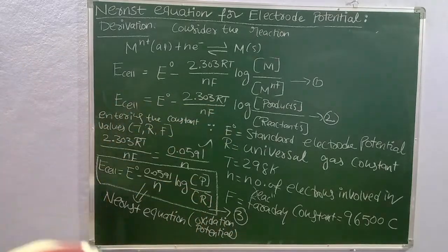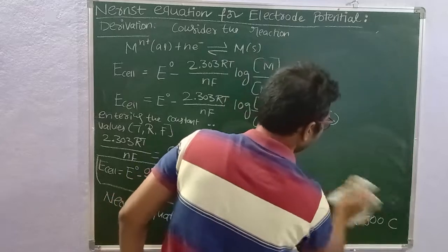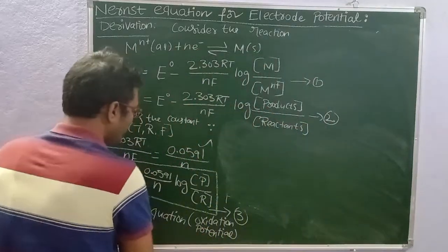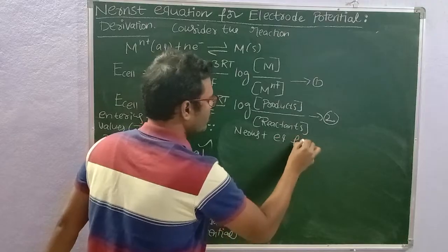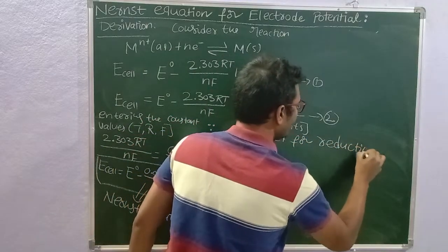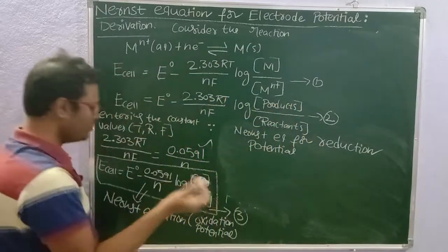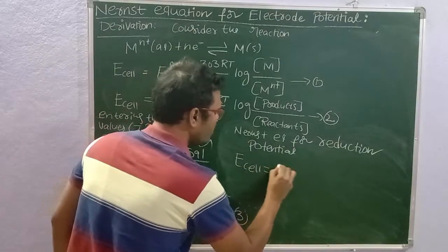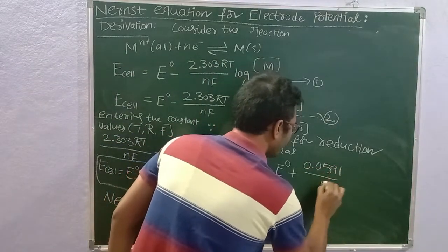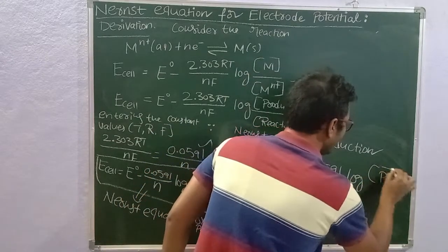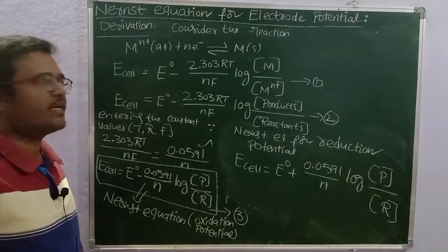Now let us write the Nernst equation for reduction potential. The equation is very simple — just change the sign. E cell = E naught plus 0.0591 divided by n, times log of concentration of products divided by concentration of reactants. That is the expression for the Nernst equation for reduction potential.